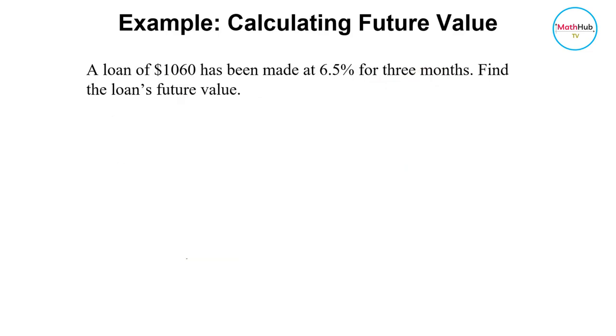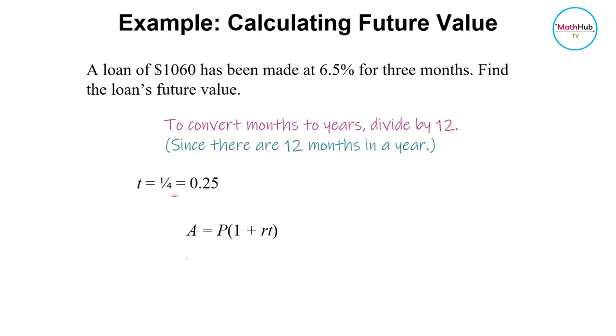Now it's important to take note that in the formula here, the time should be in years. So if the time is in years and the duration or the time given here is actually in terms of months, then we would have to convert or we have to write these three months in terms of years. So T would be 1 fourth, that is 3 over 12, and that is equal to 0.25.